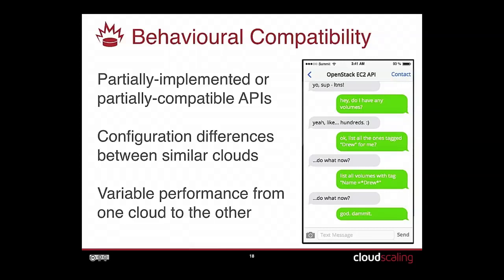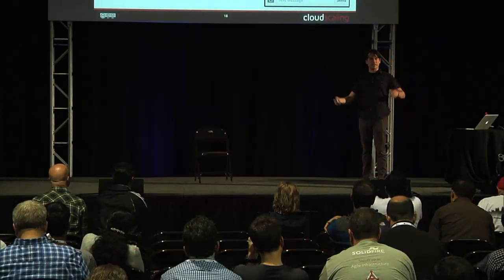Variable performance from one cloud to another is another issue. As more public OpenStack clouds appear, what do we know about what's going on underneath? Is a cloud being oversold? The hotel industry has known for years you can safely oversell 10%. Same thing happens with clouds — you don't know what they've sold, you don't know who else is on the same network link as you.